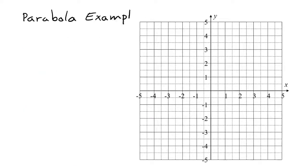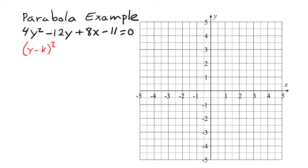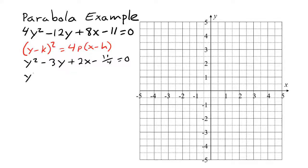Our final example has the messiest algebra: 4y squared minus 12y plus 8x minus 11 equals 0. There's a square on the y, so we use the standard form y minus k, quantity squared, equals 4p times x minus h. Because the y squared term has a coefficient of 4, we first divide all the way through by 4, leaving y squared minus 3y plus 2x minus 11/4 equals 0. We keep the y pieces on the left and move the rest to the right, then complete the square: half the coefficient of the linear y term is negative 3/2. Squaring negative 3/2 gives 9/4, which we add to both sides.